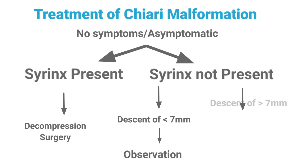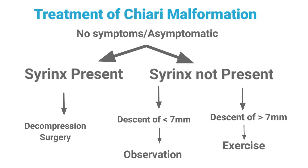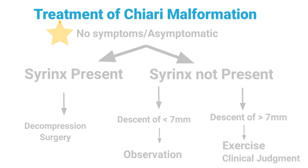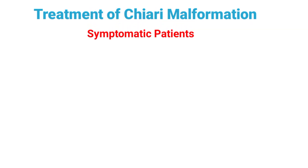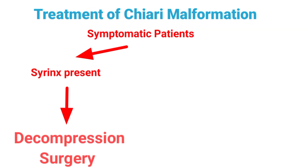If the descent is greater than 7 mm, we advise specific exercises to the patient. Clinical judgment is included here — whether we observe this patient or go for surgery. Now for the category of symptomatic patients: if the patient is symptomatic and syrinx is positive, then we have to go for decompression surgery.